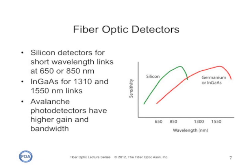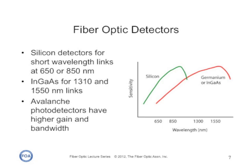Germanium is a detector typically only used for long wavelengths and power meters. Very high speed systems may use special detectors called avalanche photodiodes, which use high voltage techniques to achieve extremely high bandwidth.